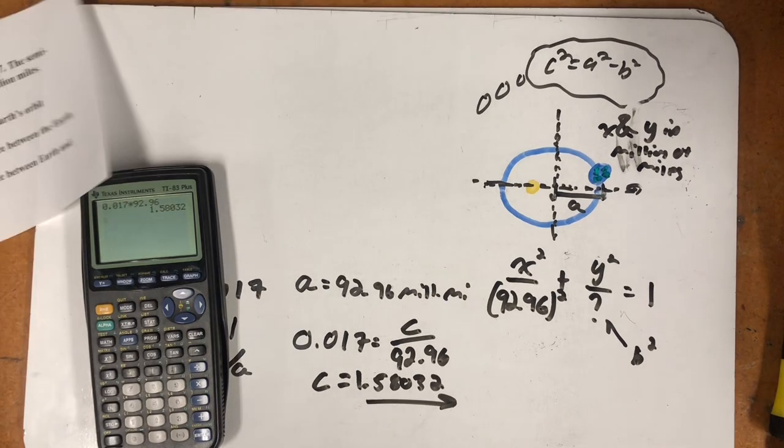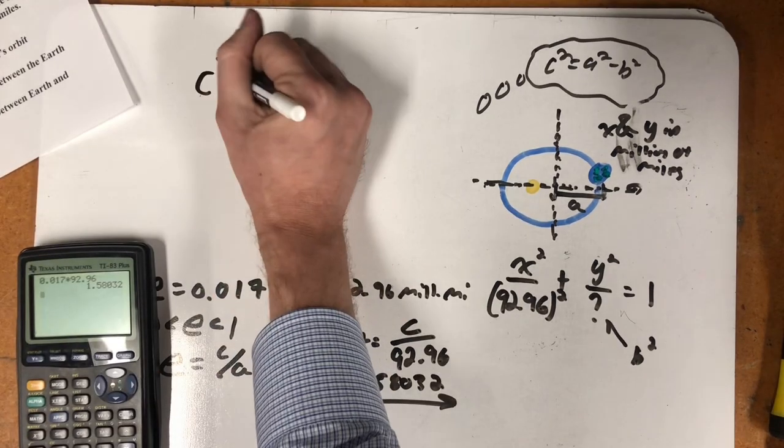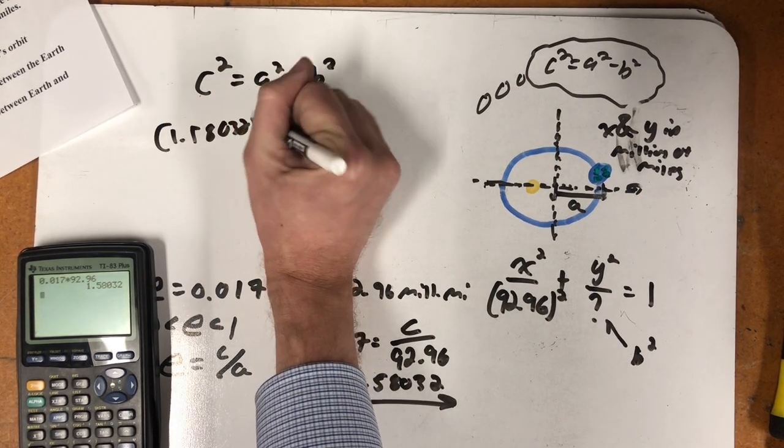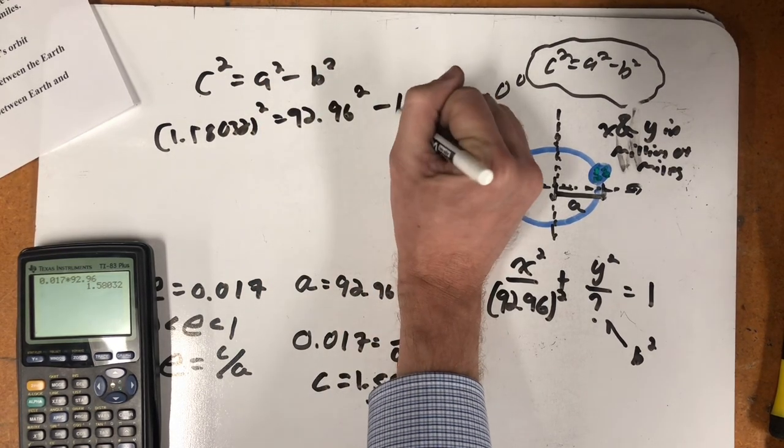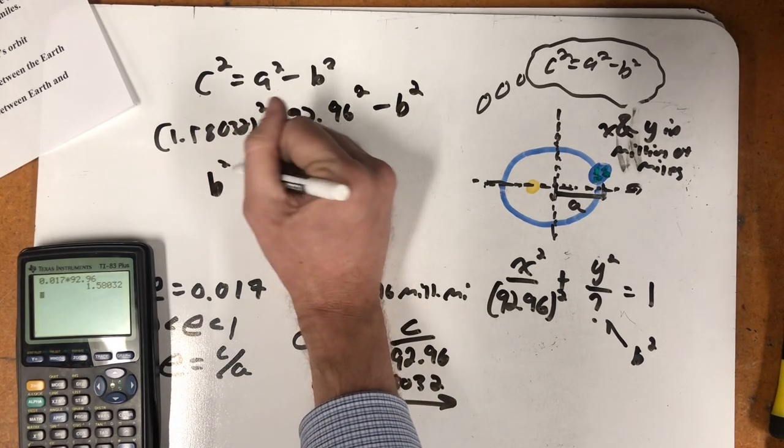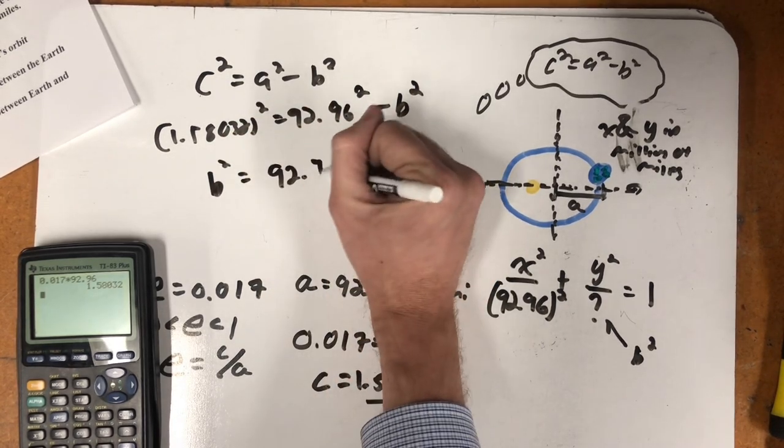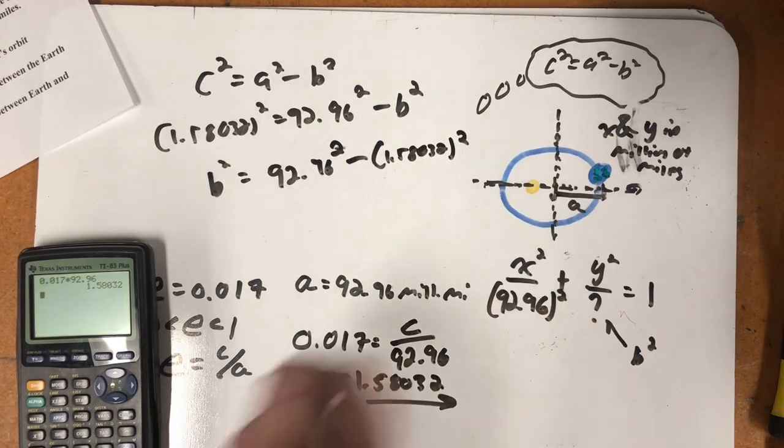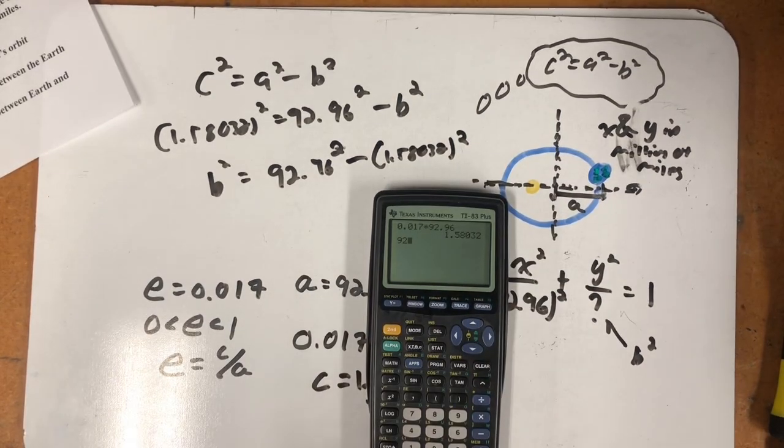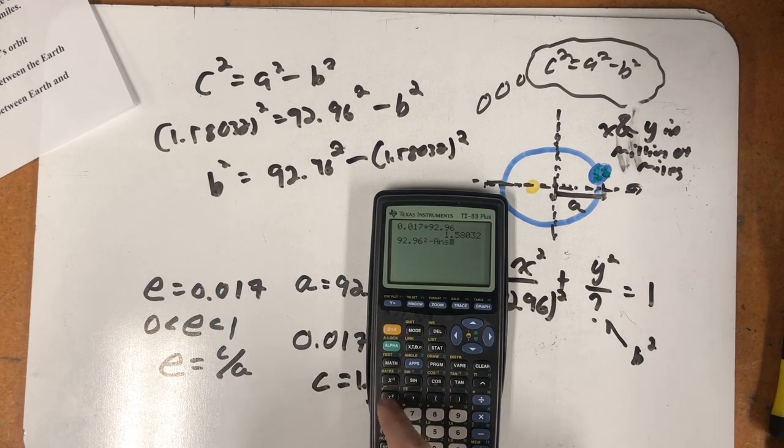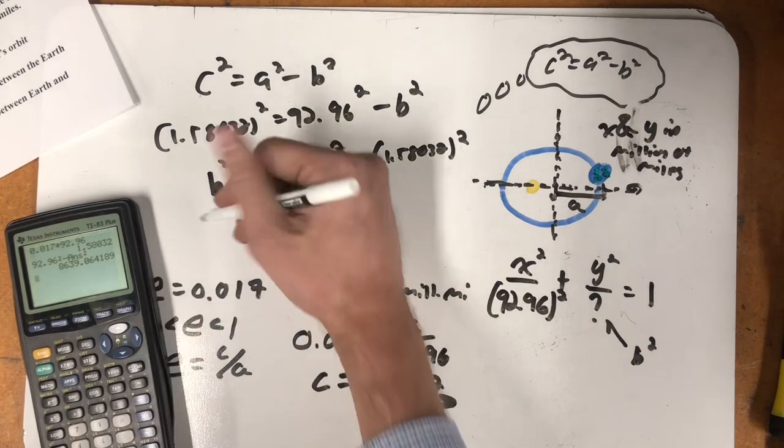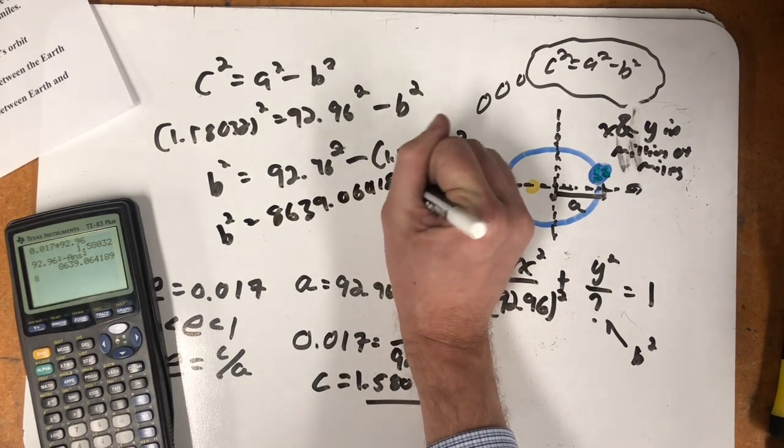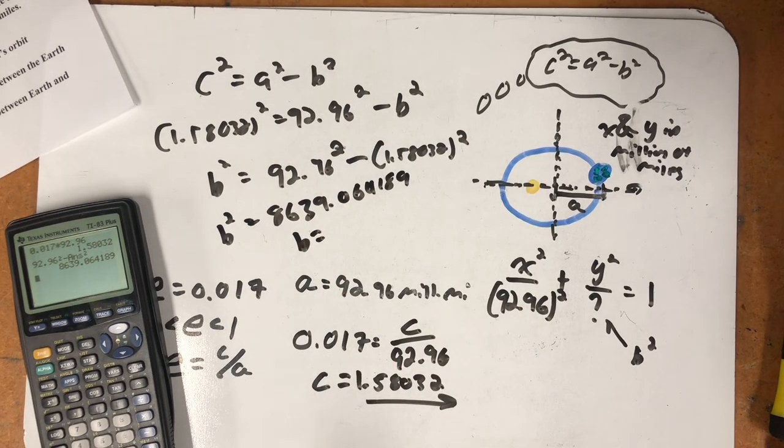Now we need to find B squared. So, C squared is equal to A squared minus B squared. So, I have 1.58032 squared is equal to 92.96 squared minus B squared. So, B squared is 92.96 squared minus 1.58032, that value of C. So 92.96 squared minus that thing I just got squared. B squared is 8,639.064189.